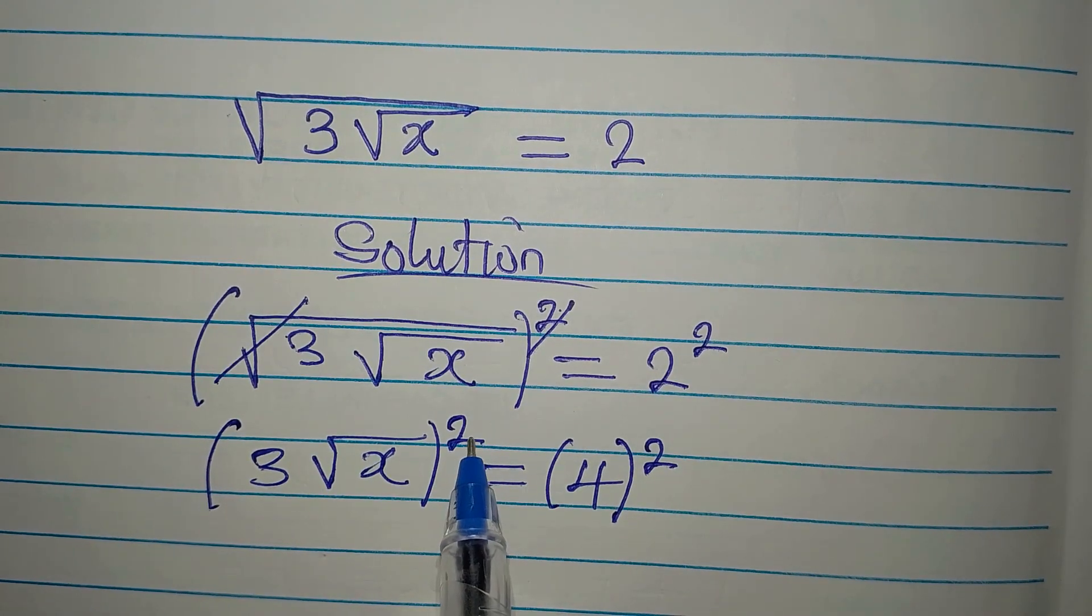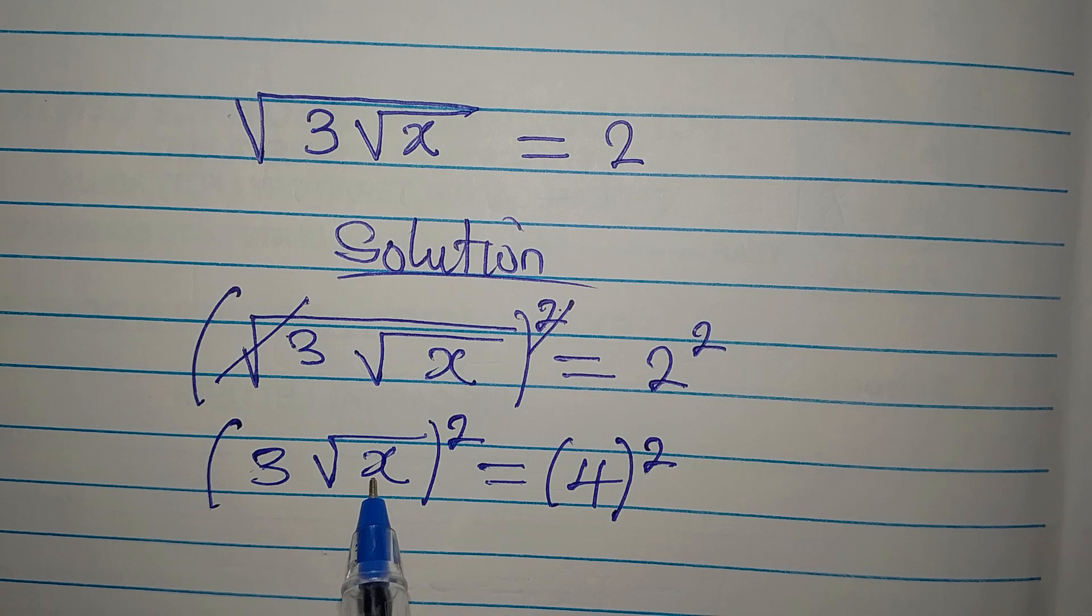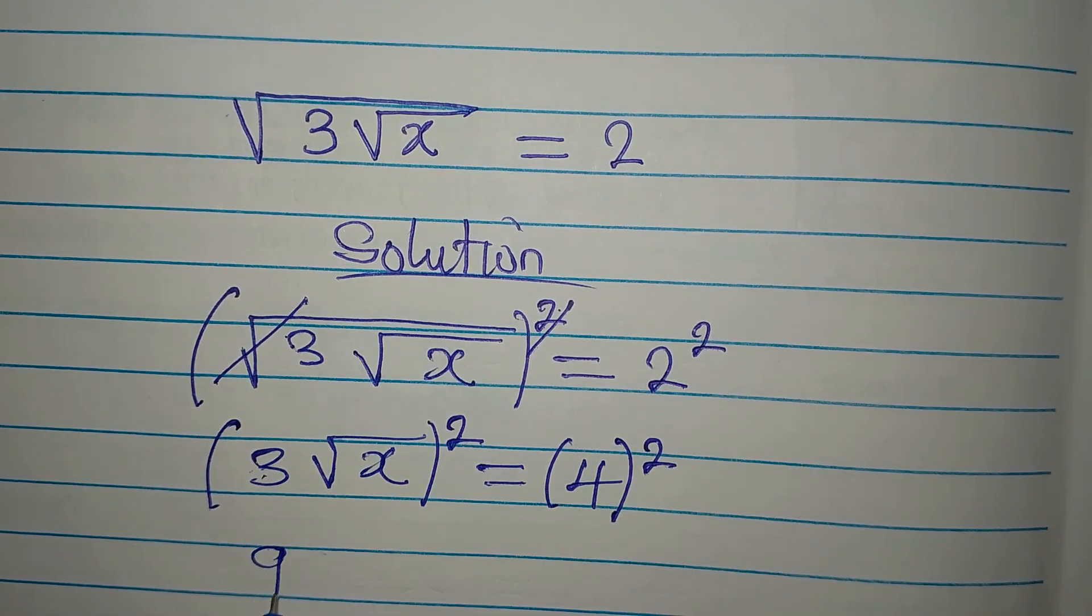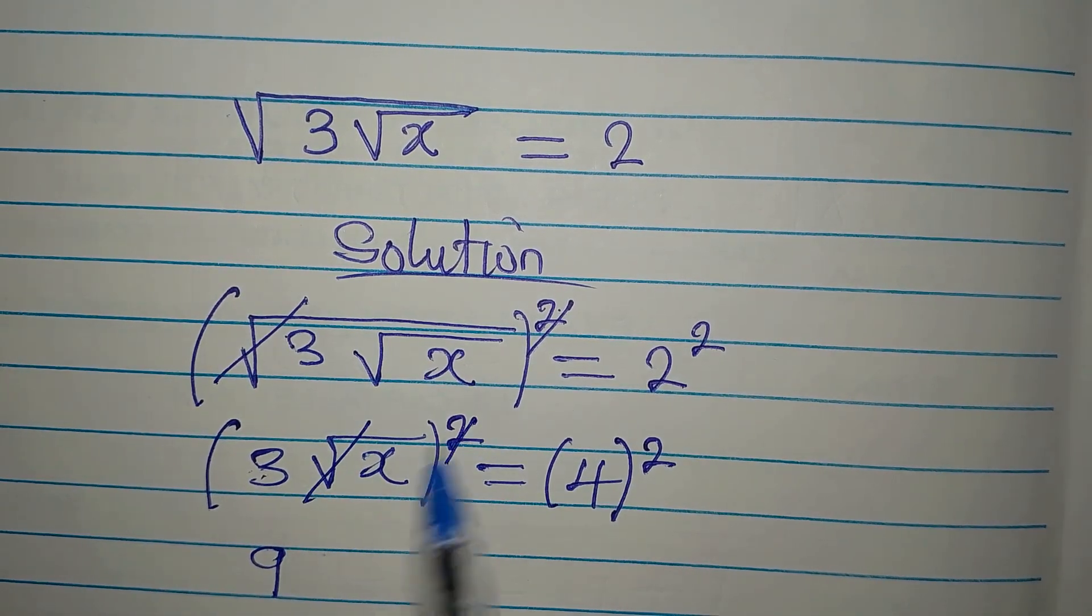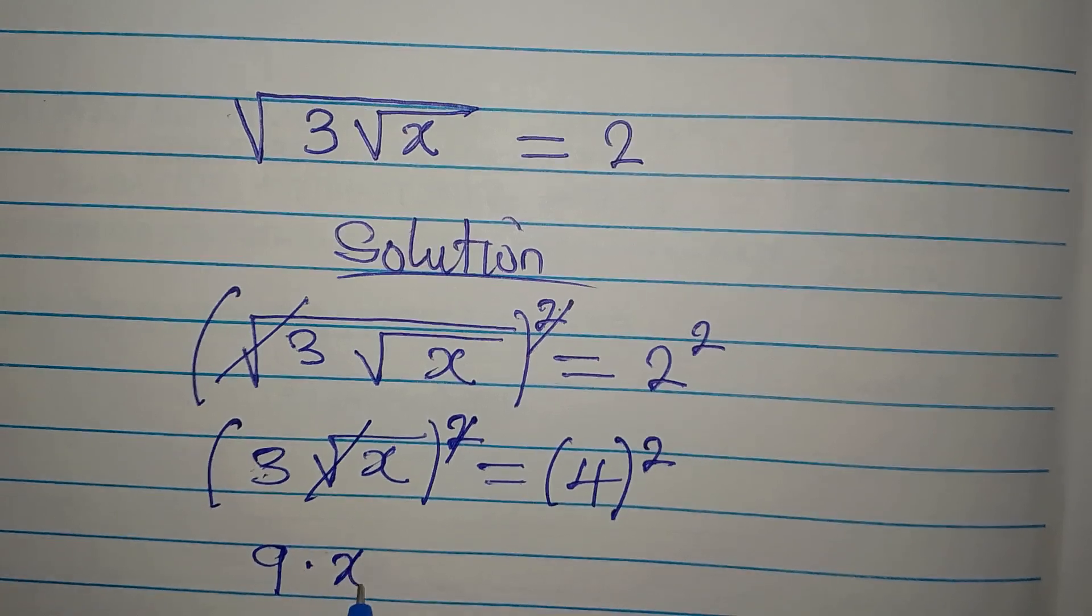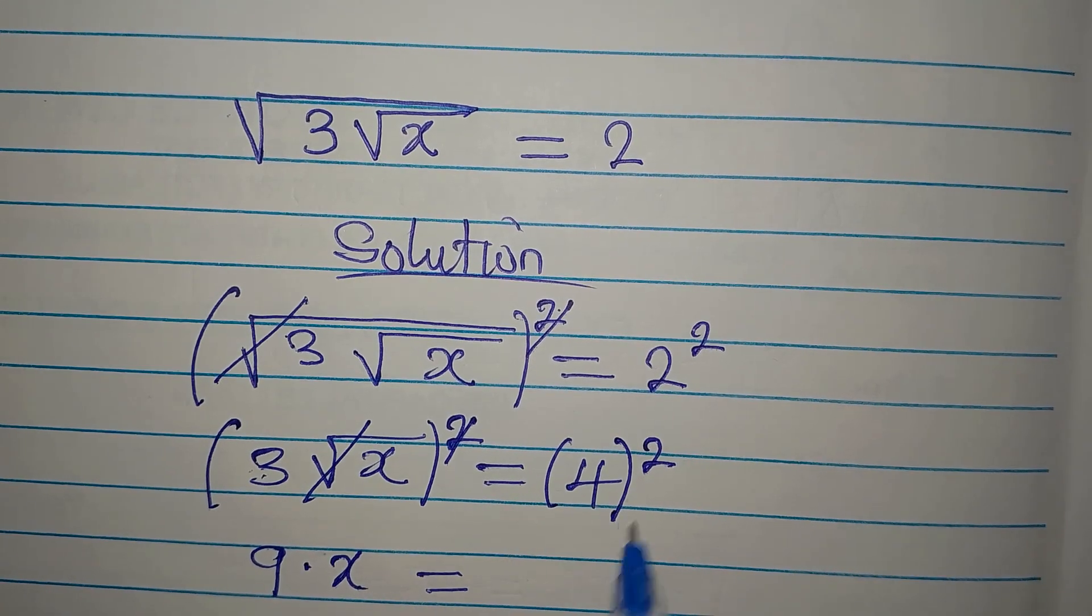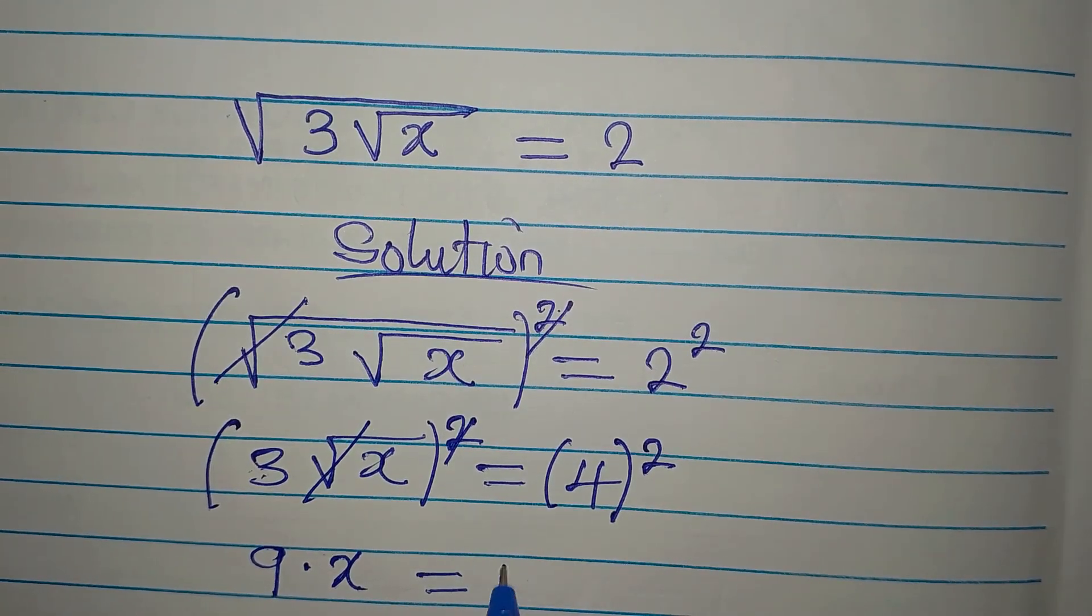But this square now is for 3 and root x. So 3 squared will give 9. Then this can now go, we will just multiply this by x. And it's equal to 4 squared, which will give 16.